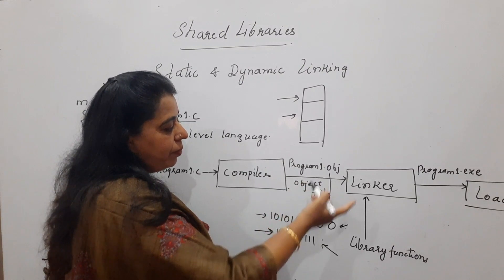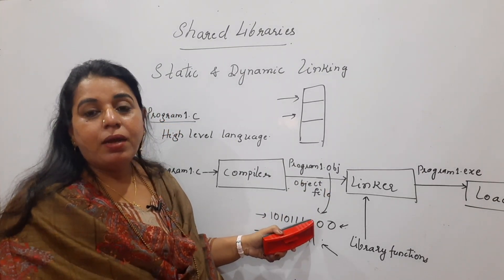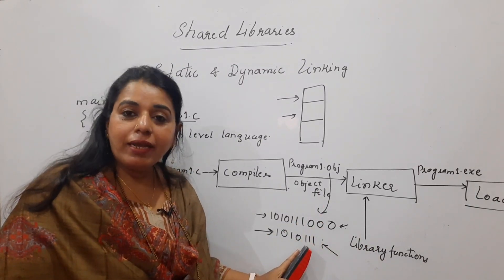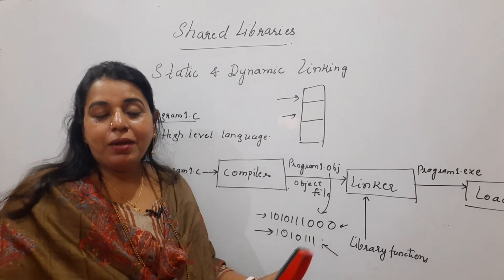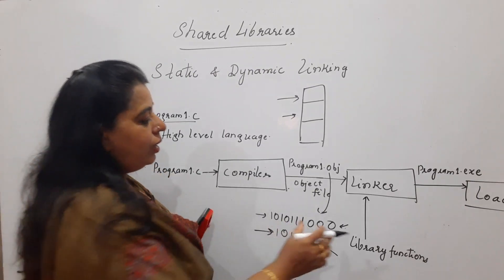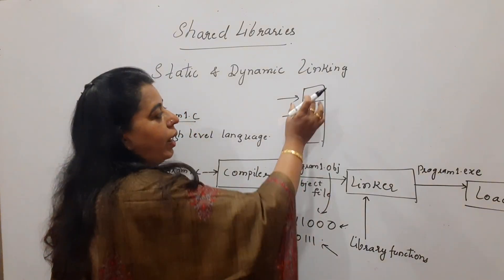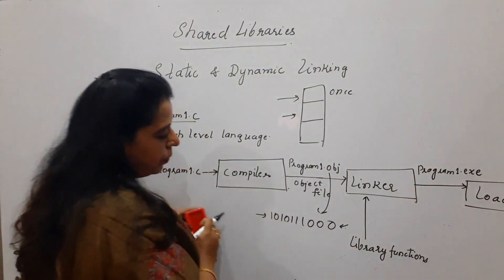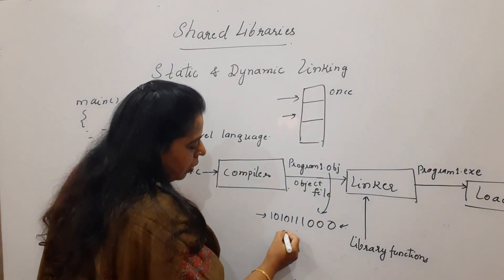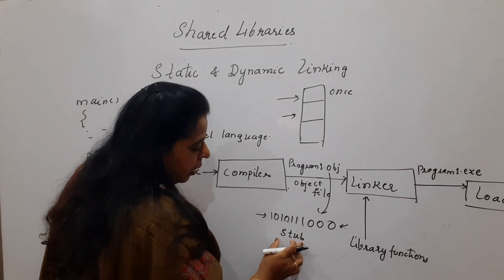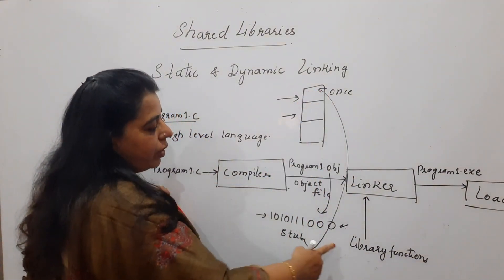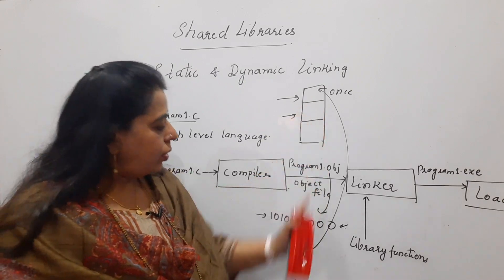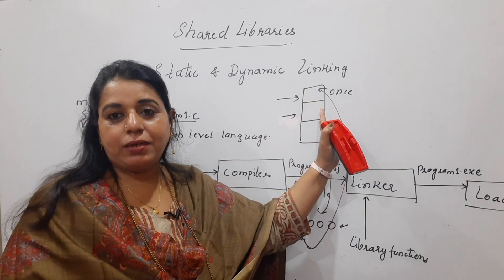Another problem with static linking: if there is an error and the user recompiles, the linker has to add the library object code all over again. In dynamic linking, the library functions needed by a program are present only once in memory. When the object code for the program is generated, only a reference — called a stub — is made for that library function. The stub points to the address in memory where the library function is located, so another user's program needing the same function simply refers to that same memory address.